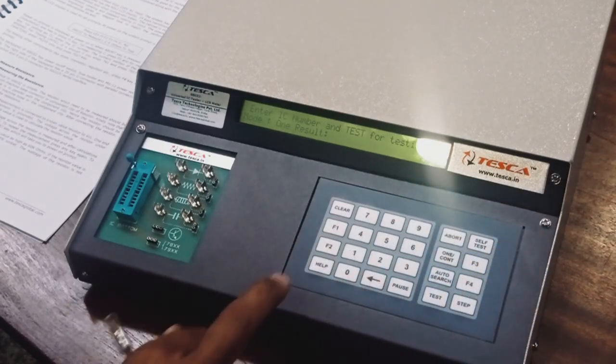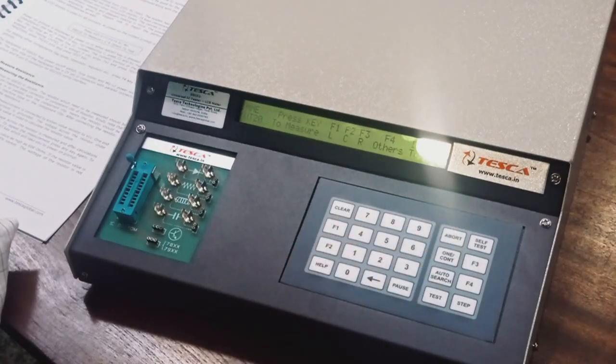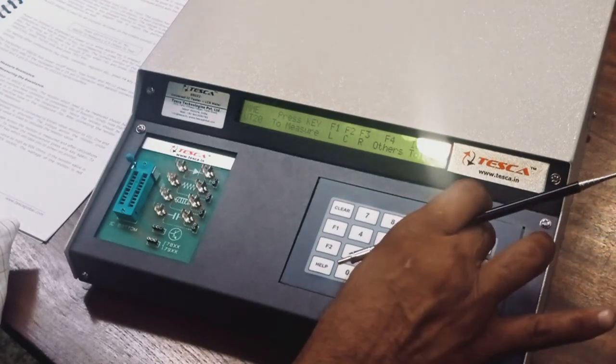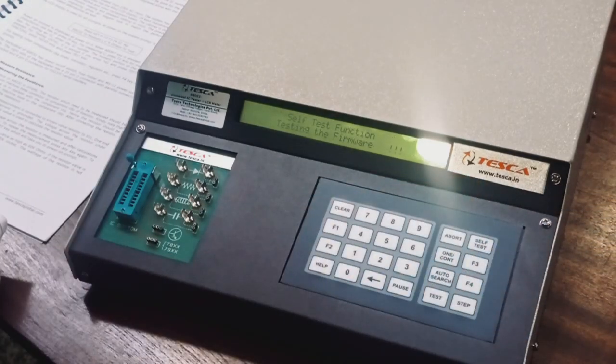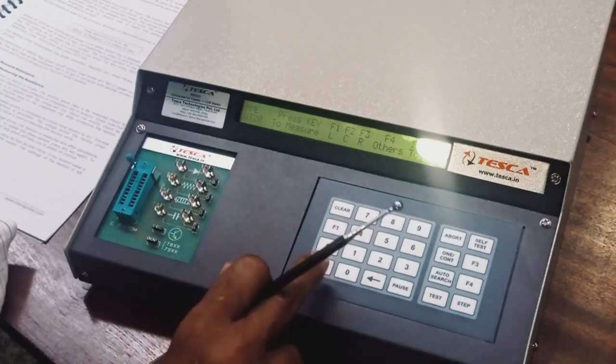That is the help option. Once we operate this. After that, one other switch given, self test. You can press it. Now it's going on self mode, self test. And now come back.